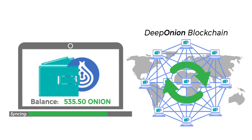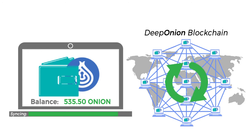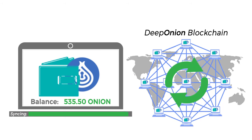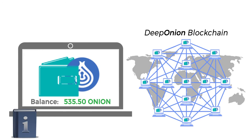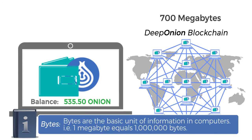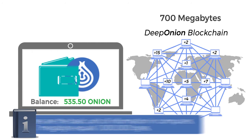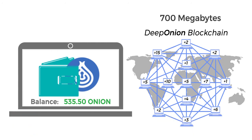The amount of time it takes to sync to the blockchain depends on when you've last connected to it, and also the size of the DeepOnion blockchain. The DeepOnion blockchain currently has 700 megabytes, and the size increases all the time because it records new movements of money around the world.